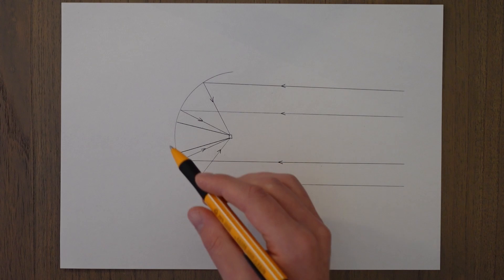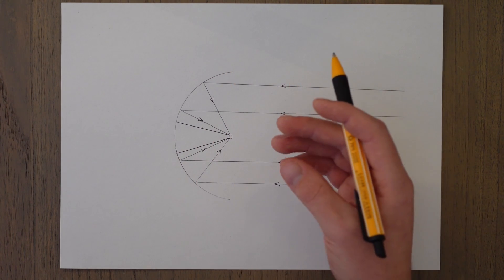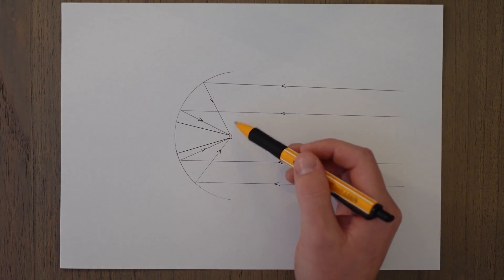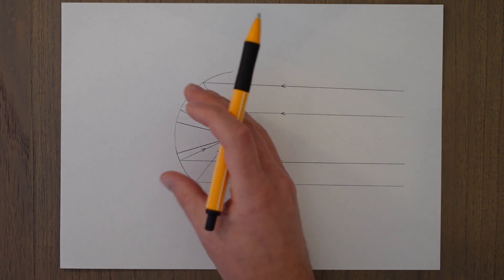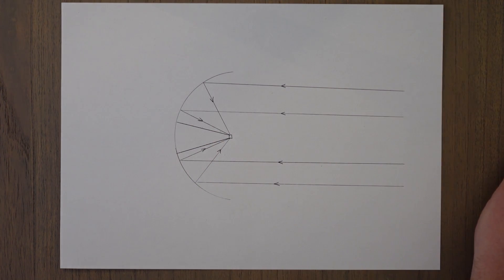You can also use a parabolic antenna for transmitting a signal again in a very directional way. You just basically reverse the process and the transmitter is placed at the focus point, sends out the signals towards the dish which then reflects back this beam of radio waves again in a very directional manner.